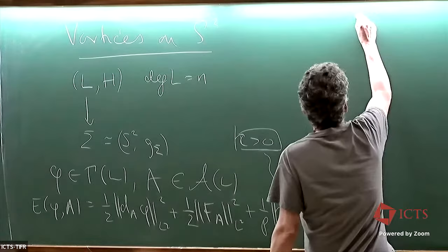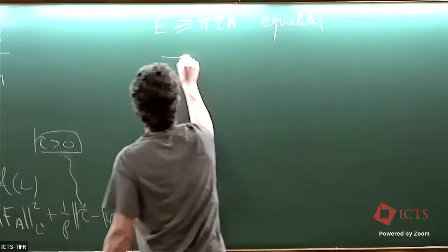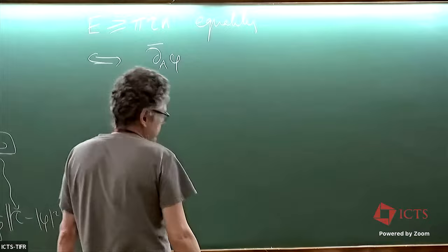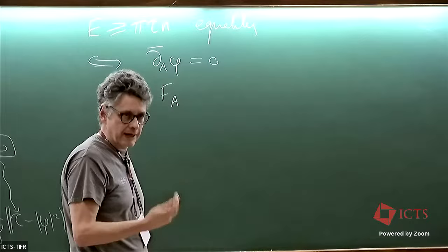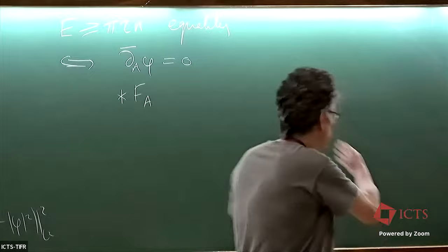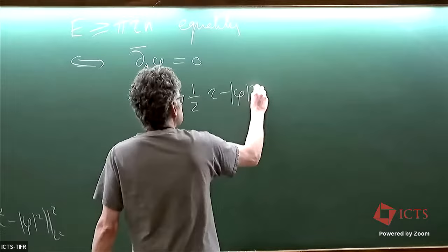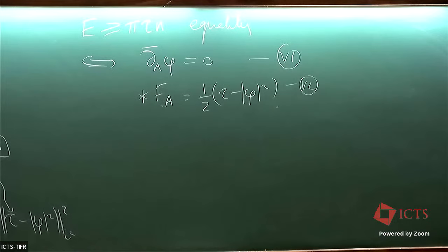Equality holds if and only if a nice pair of equations holds: phi is holomorphic with respect to the holomorphic structure defined by the connection, and the curvature of the connection — the magnetic field, which I think of as a real two-form — satisfies the second vortex equation. These are the vortex equations, and solutions minimize energy in their topological class. Such solutions are called n-vortices.